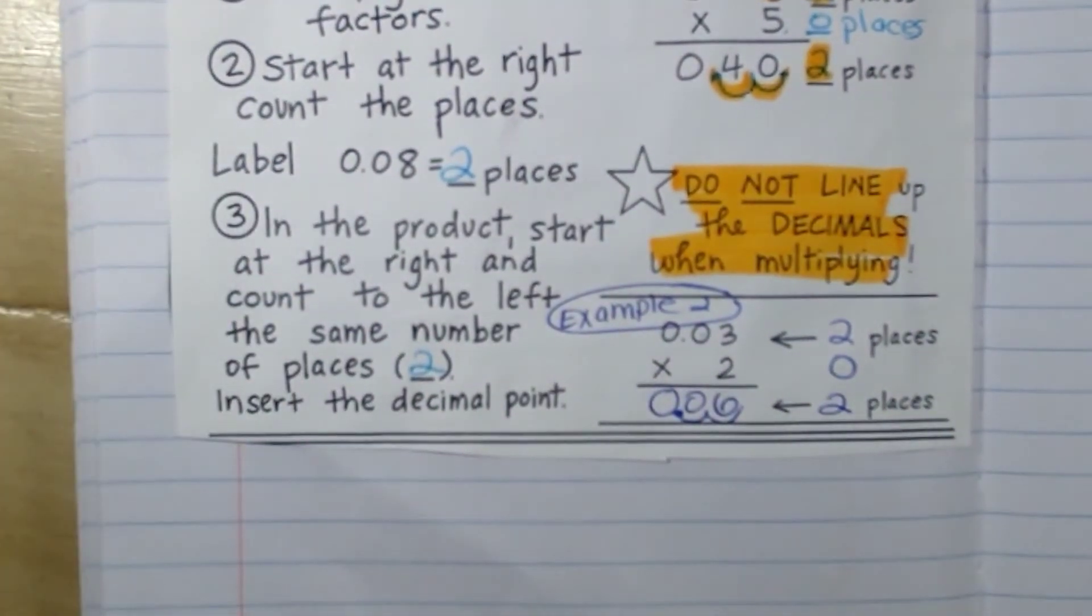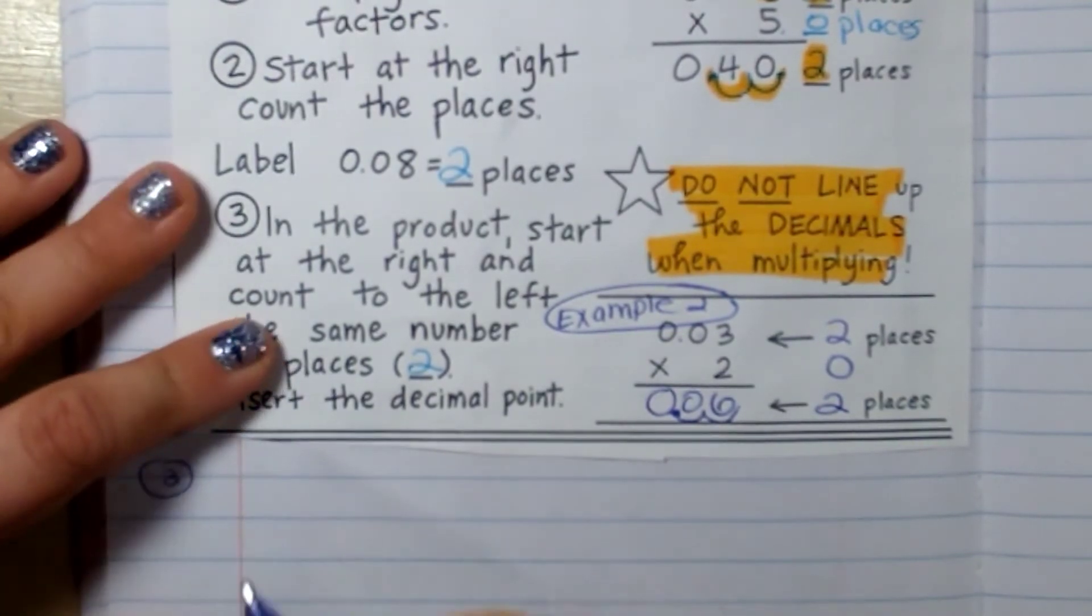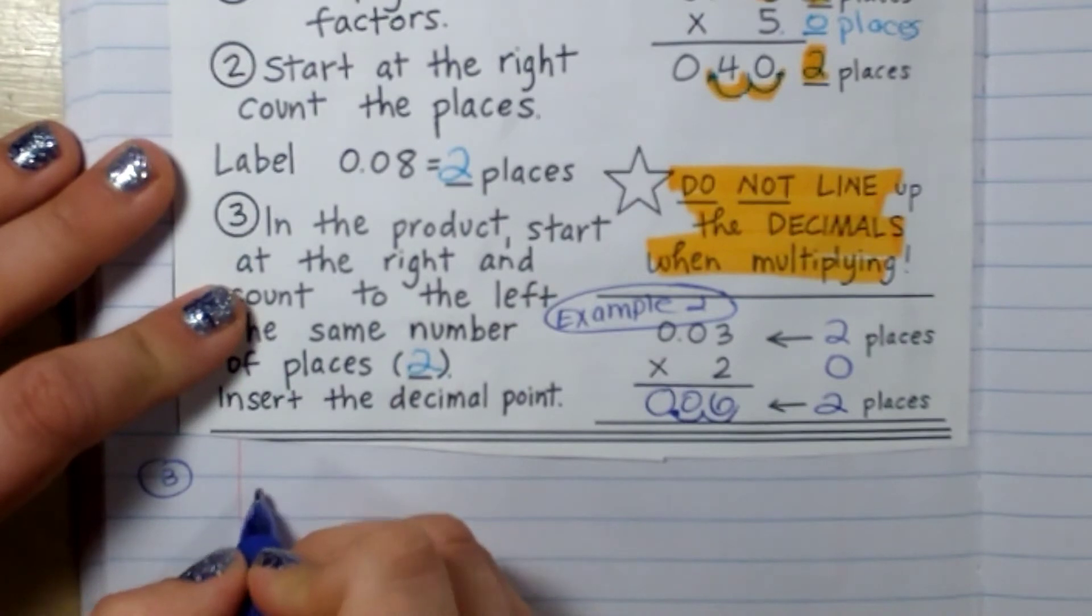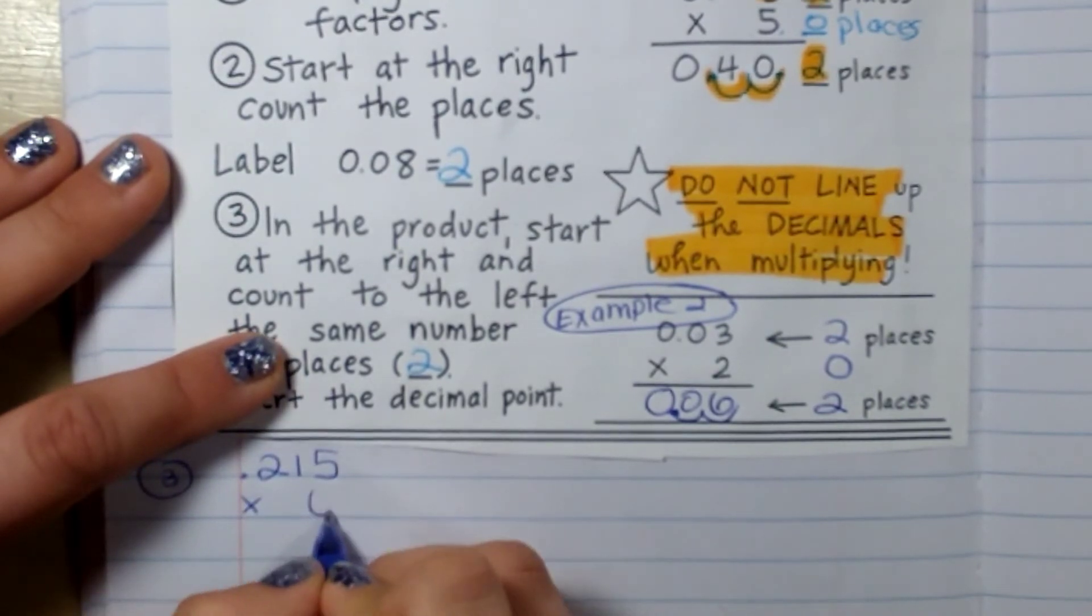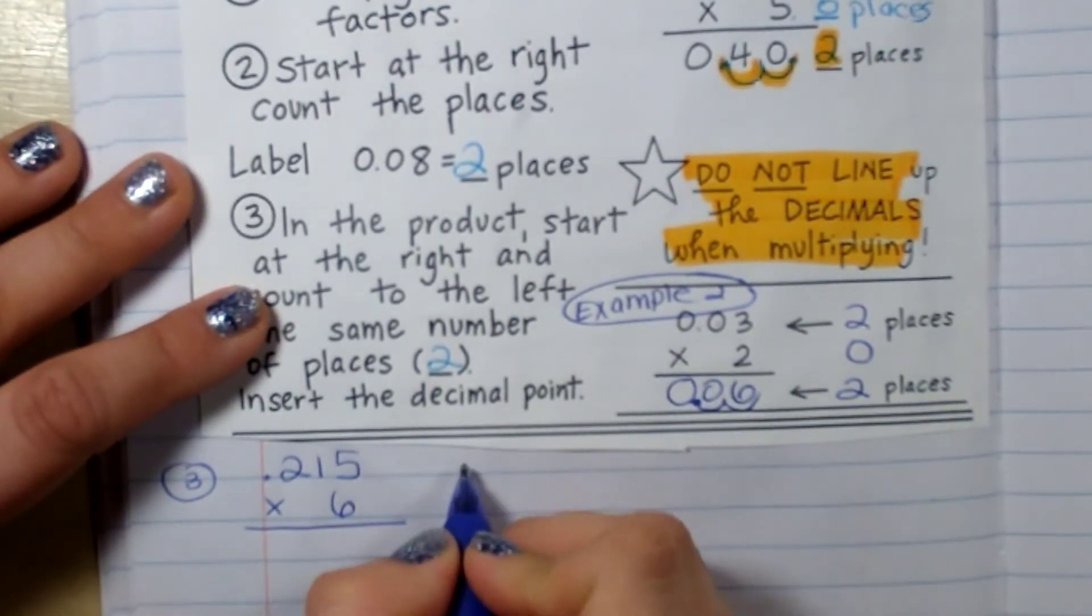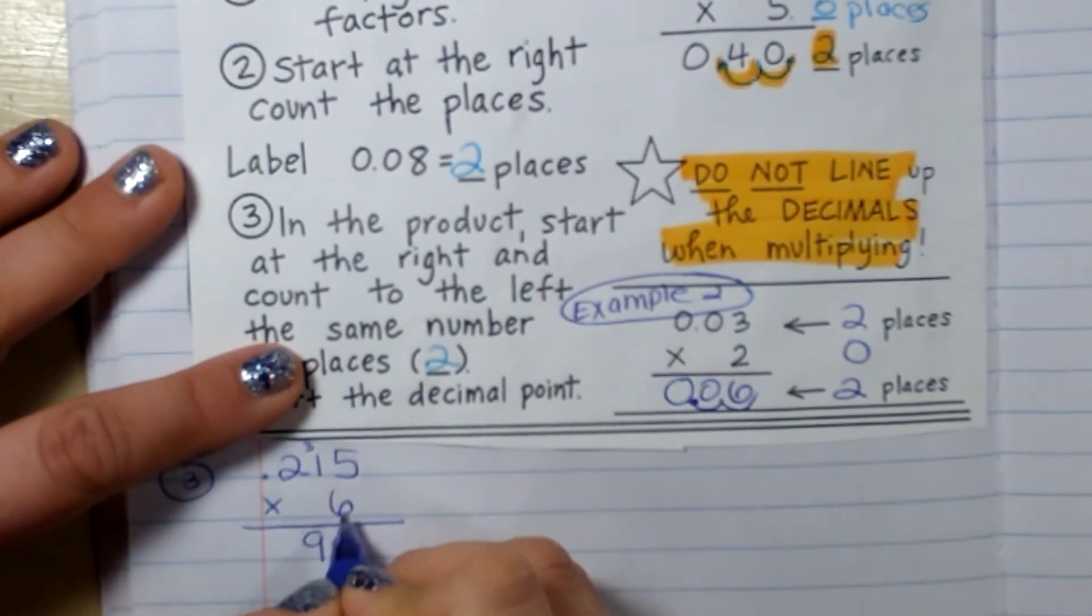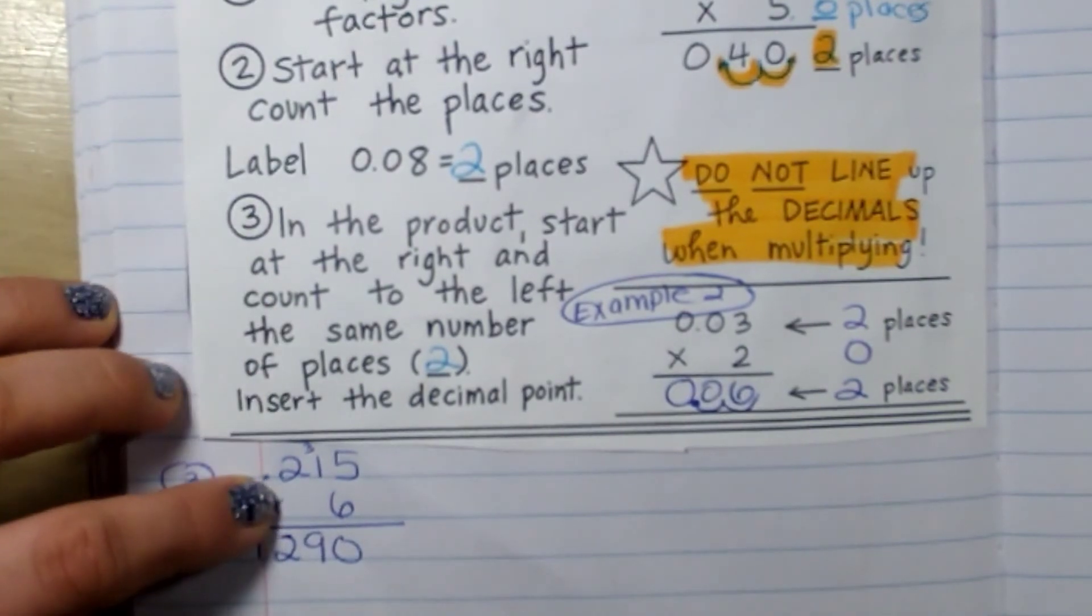So I'm going to do two more examples. So this is number 3. I'm going to multiply 215 times 6. This would be 30, 9, 12.